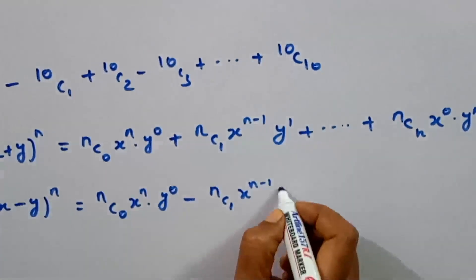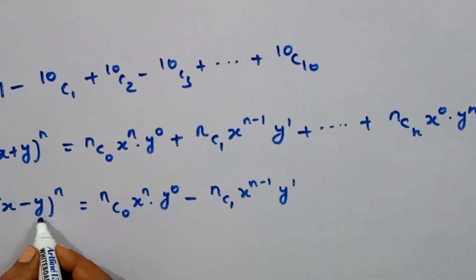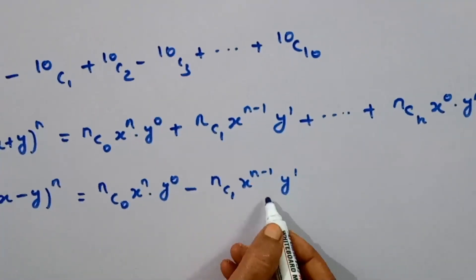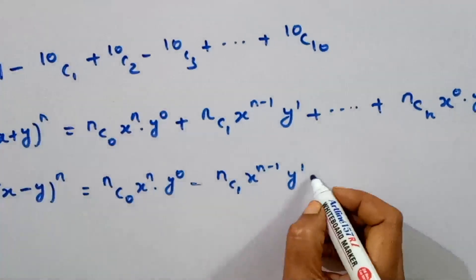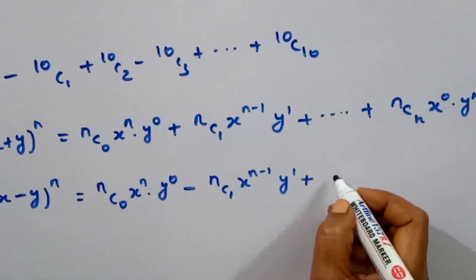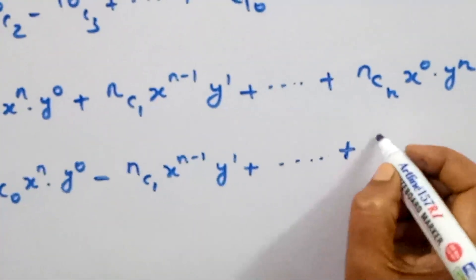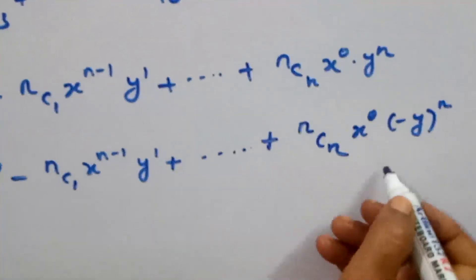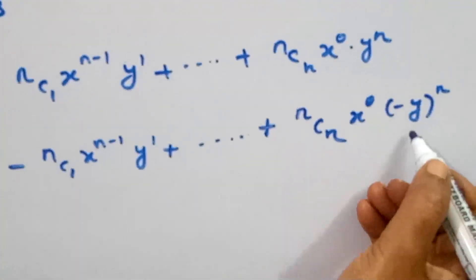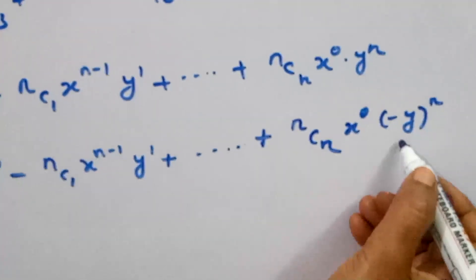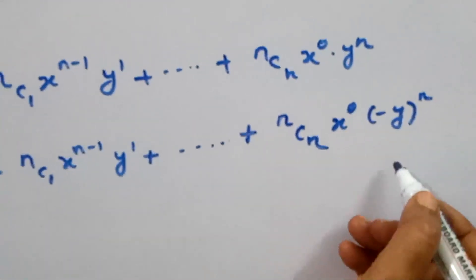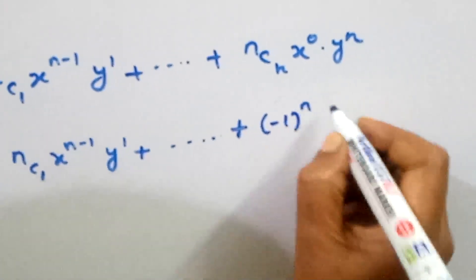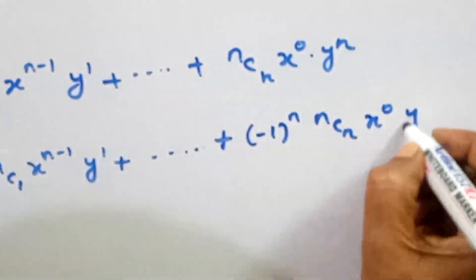Continuing the expansion: nc1 times x to the power n minus 1 times y to the power 1, through to ncn times x to the power 0 times y to the power n. We convert y to the power n and identify ncn times x to the power 0 times y to the power n.